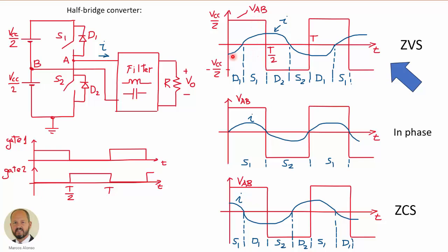The first possibility is the current lagging the voltage — this is usually known as zero voltage switching. We can also have the current perfectly in phase with the voltage, and we can have the current leading the voltage, which is usually known as zero current switching. Today we are going to focus on zero voltage switching, and with this operating mode using MOSFETs we can attain very low switching losses, increase efficiency, increase operating frequency, and decrease the size of inductors and capacitors.